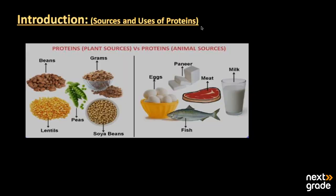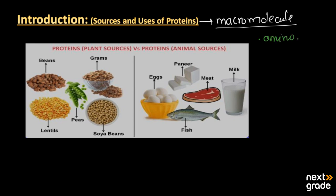Asalaamu alaikum, my dear students. I hope all of you are fine and doing well. The topic we will discuss today is the sources and uses of proteins. In our previous lesson we already learned that proteins are macromolecules, and these macromolecules help us a lot. Mainly, all these proteins are made up of amino acids, which is why amino acids are known as the building blocks of proteins. There are 20 amino acids, of which 10 are essential amino acids.